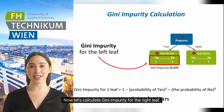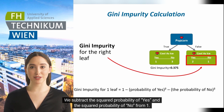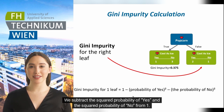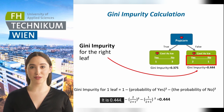Now let's calculate Gini impurity for the right leaf. We subtract the squared probability of yes and the squared probability of no from 1. The result is 0.444.